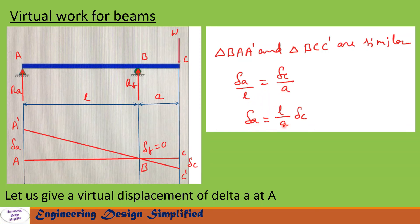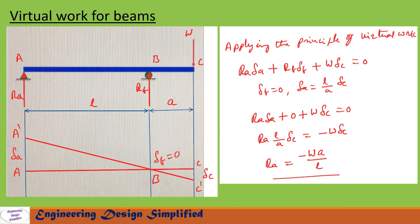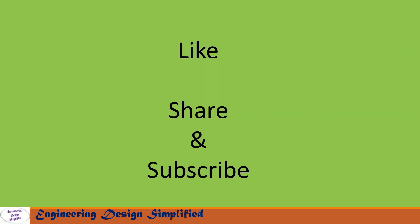So delta A in terms of delta C can be written as: delta A equals L divided by A into delta C. Now writing the virtual work equation: Ra into delta A plus Rb into delta B plus W into delta C equals zero. In this equation delta B equals zero and delta A equals L divided by A into delta C. After substituting and simplifying, we ultimately get the reaction at A: Ra equals minus W times A divided by L.